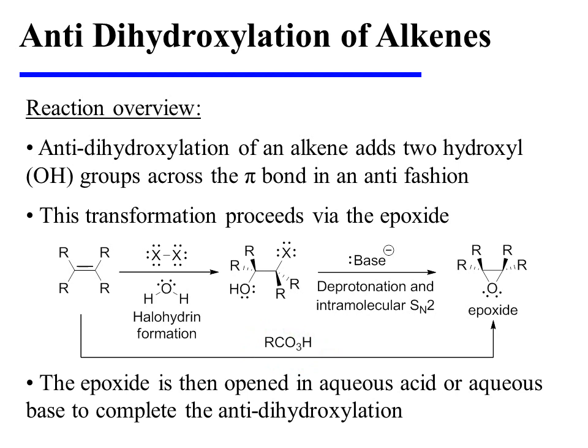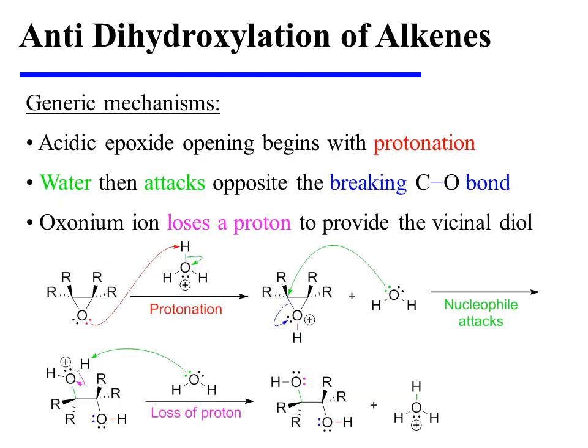Regardless of how it is formed, the epoxide is then opened in aqueous acid or aqueous base to complete the anti-dihydroxylation. Acidic epoxide opening begins with protonation of the epoxide oxygen. This yields an oxonium ion, which is then attacked by water acting as a nucleophile, which breaks open one of the carbon-oxygen bonds of the epoxide. Notice that water will attack opposite the breaking C-O bond, and that's why this will be an anti-dihydroxylation.